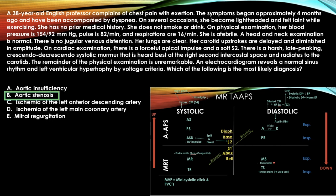The answer is aortic stenosis. This is a systolic murmur that radiates upward and is heard at the right second intercostal space, which is the aortic landmark. Systolic murmur + second intercostal space = aortic stenosis. Crescendo-decrescendo is also part of aortic stenosis but not placed on the chart since it's not exclusive to it.